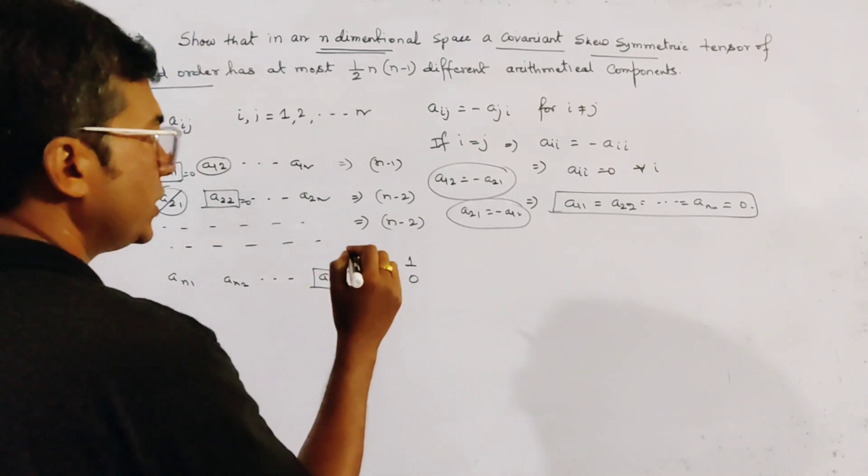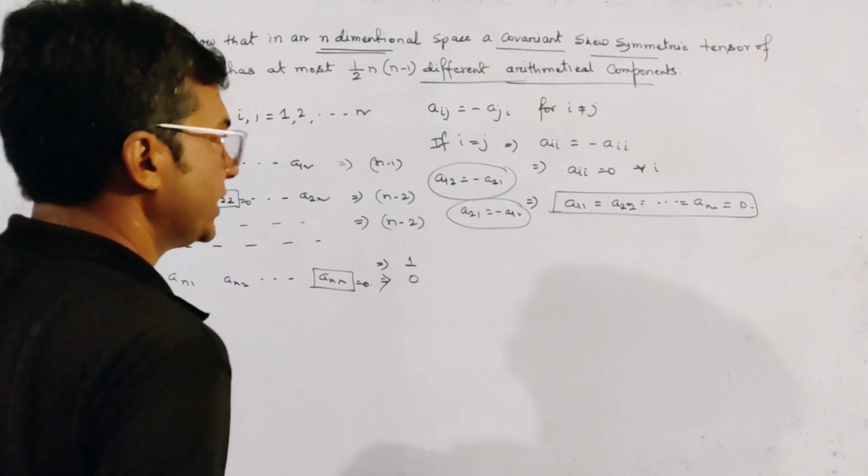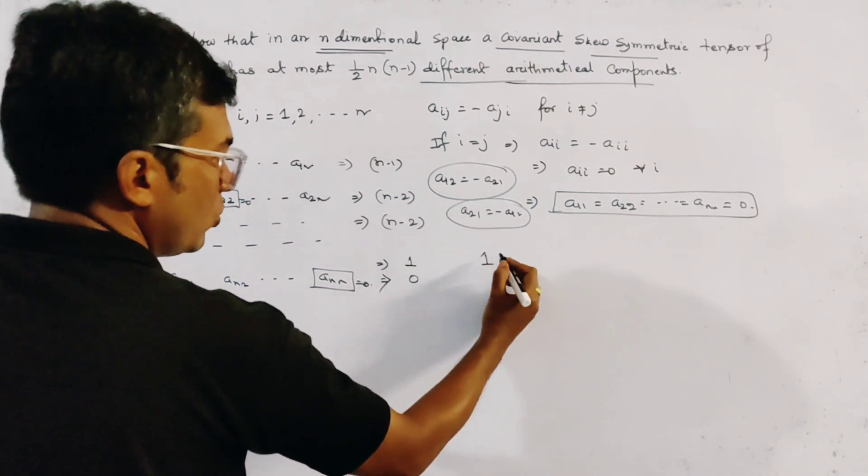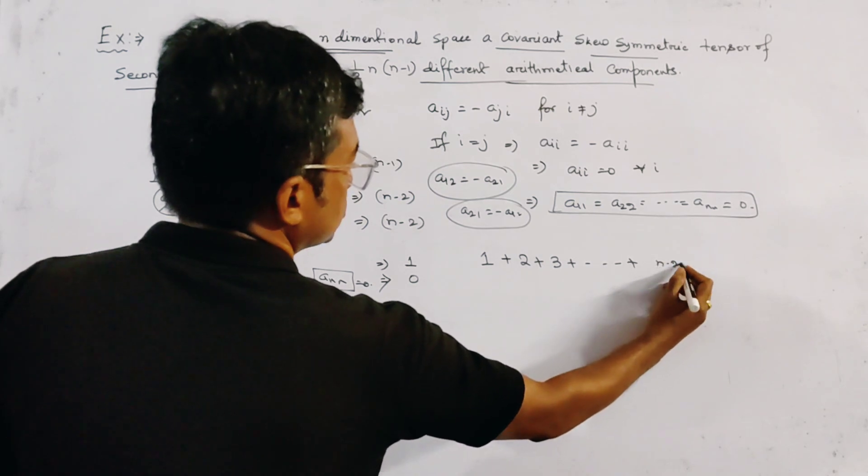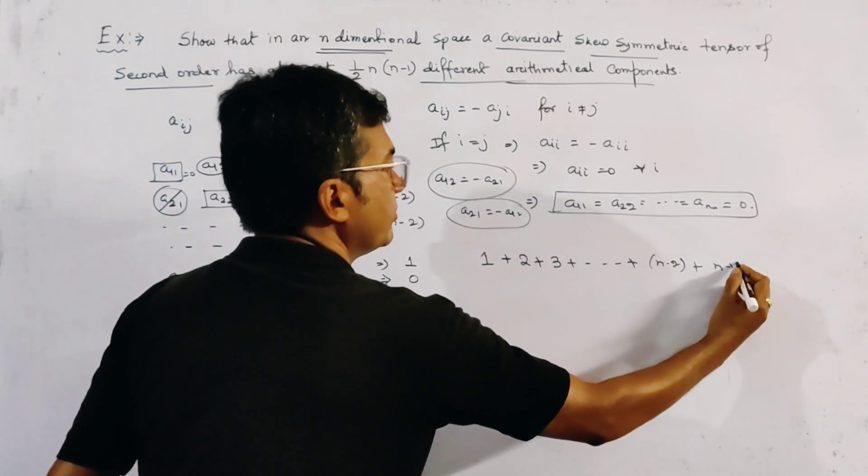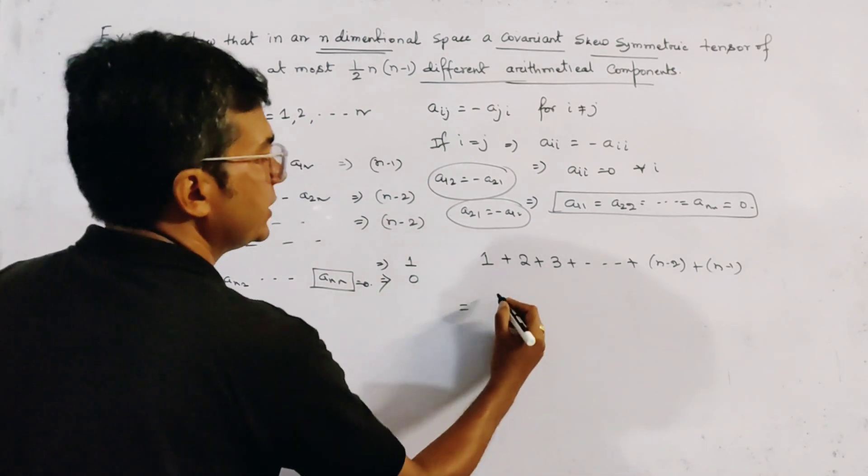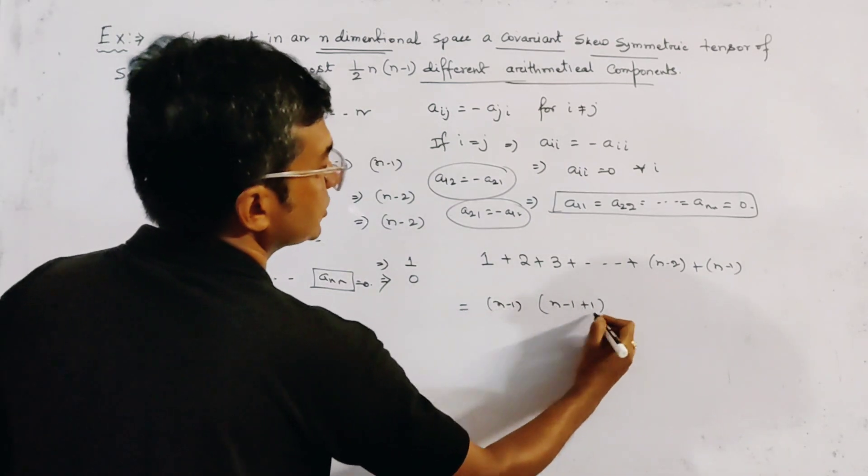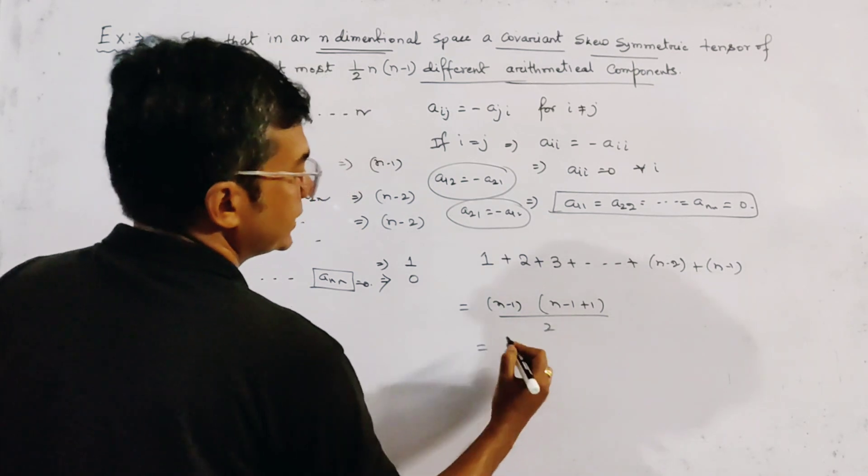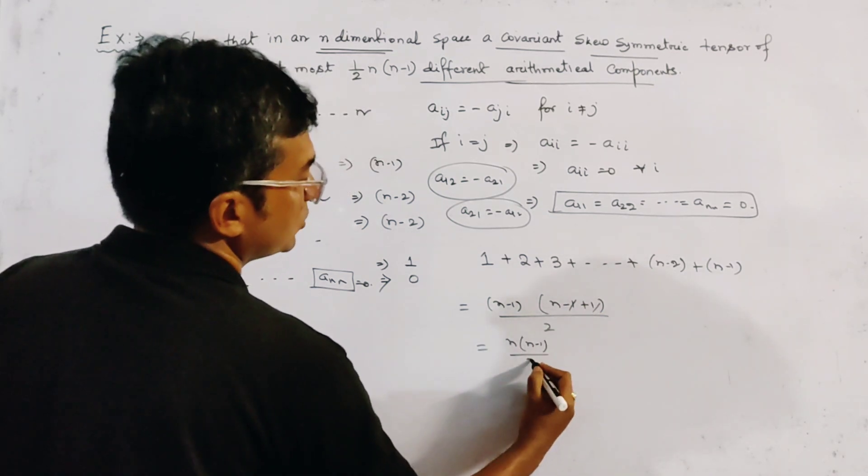So the total number of arithmetical components that are different is given by 1 plus 2 plus 3 to n-2 to n-1. And this is given by n-1 into n-1 plus 1 by 2. And the result is n into n-1 by 2.